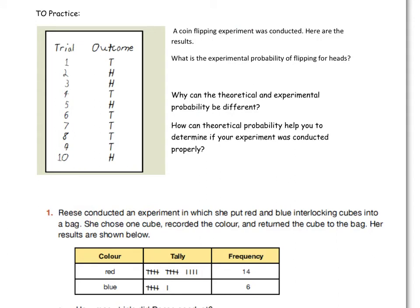Now for some practice. A coin-flipping experiment was conducted. Here are the results. What is the experimental probability for flipping heads? There were 10 trials, so the denominator is 10. Heads appeared — counting: one, two, three, four times. So the experimental probability of flipping heads is four out of ten.